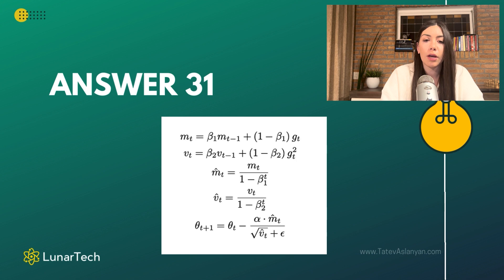As you can see, once we have our running average for the first order derivative and the running average for our second moment gradient, then we are also adjusting. We are correcting this momentum and the velocity by dividing this MT. We are taking the MT and dividing it by 1 minus beta 1 to the power T, because we want to adjust for the bias when it comes to this momentum.